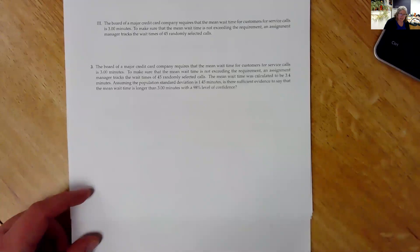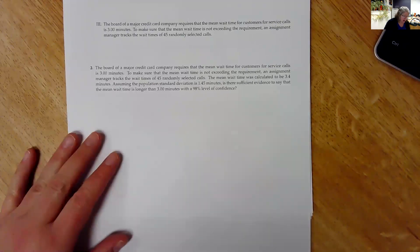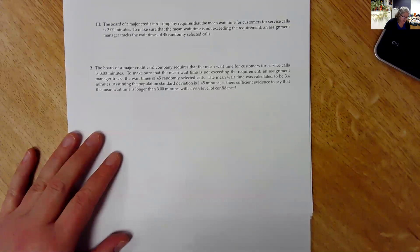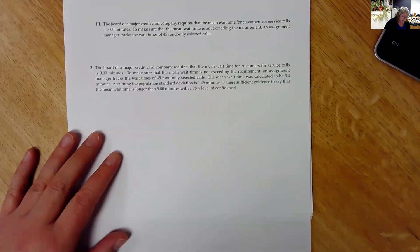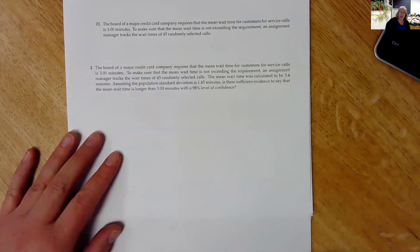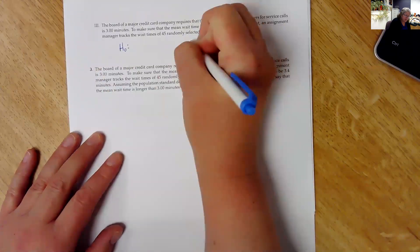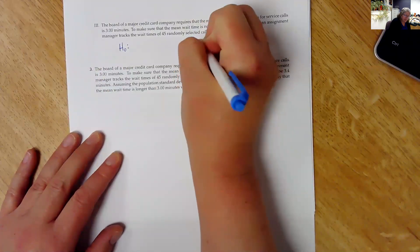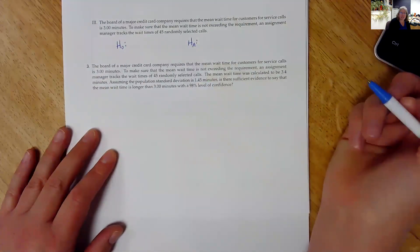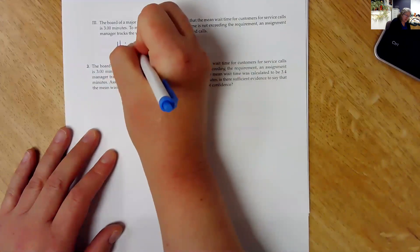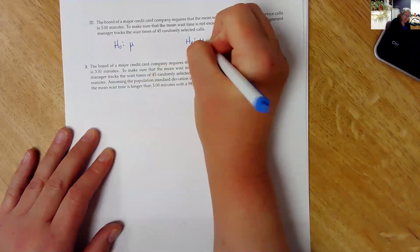And then on to number three. The board of a major credit card company requires the mean wait time for customers for service calls is three minutes. To make sure the mean wait time is not exceeding the requirement, a manager tracks the wait times of 45 randomly selected calls. So a little trickier wording there, but that's okay. We've got this. So I put my H0 and my HA when I identify which hypothesis is which. And we're still doing these population means using our mu.